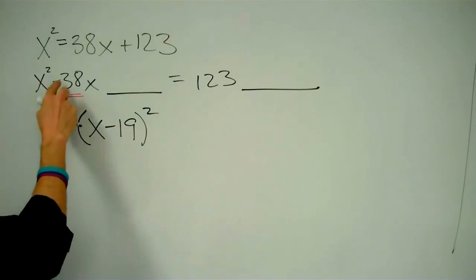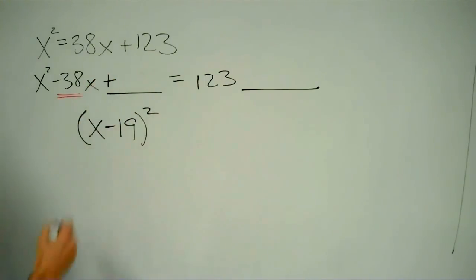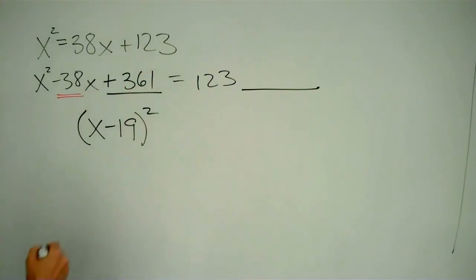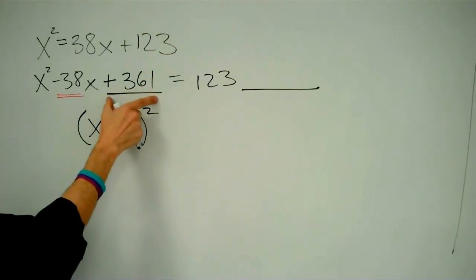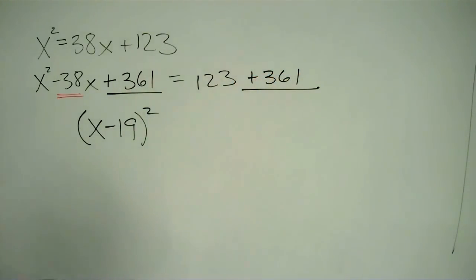x minus 19 squared is x squared minus 38x plus 19 squared. And 19 squared turns out to be 361. Whatever we add on the left, we have to also add on the right, so we get 361 here as well.